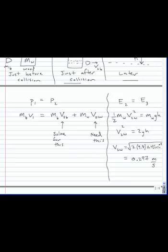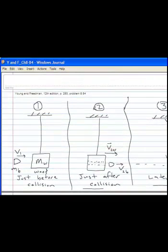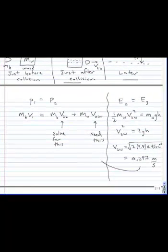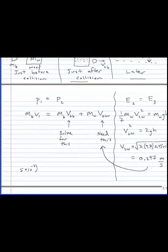Okay, so now I can put this back into my other equation and what do I get? I get 5 times 10 to the minus 3 for the mass of the bullet times its initial velocity which was given as 450 meters per second. And that is equal to 5 times 10 to the minus 3 times its final velocity plus the mass of the block times 0.297 meters per second.